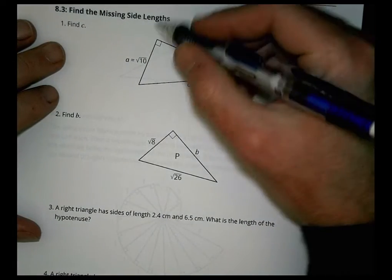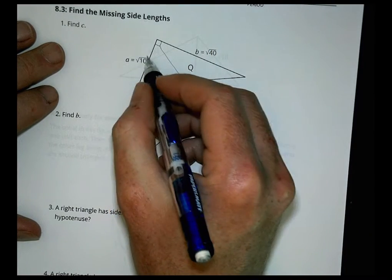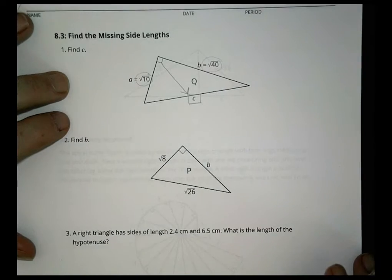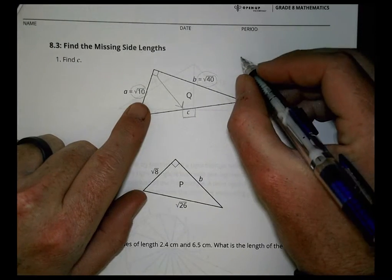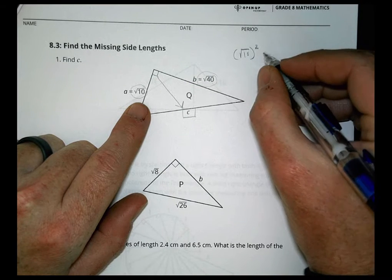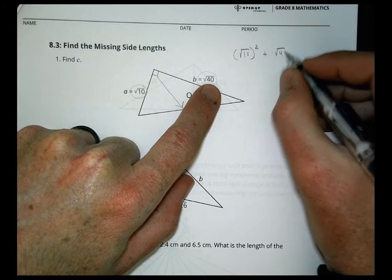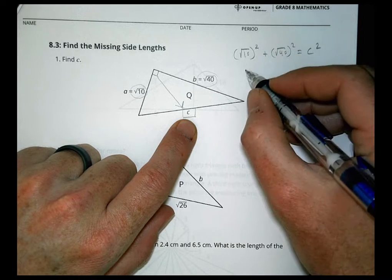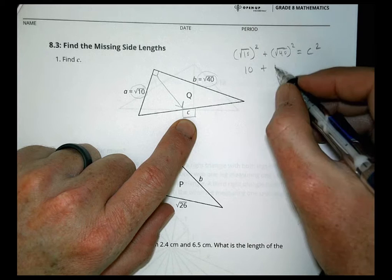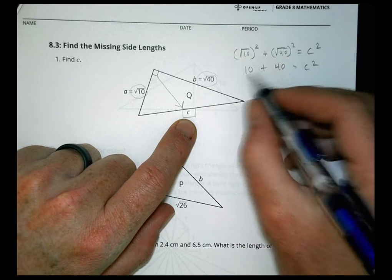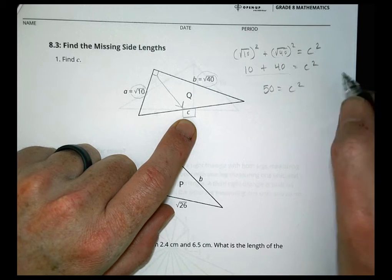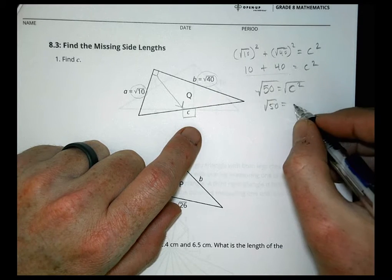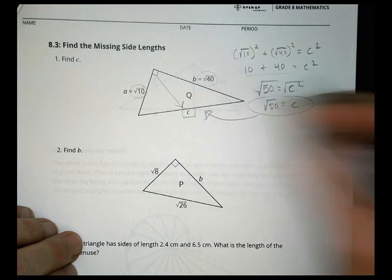Let's find the missing side lengths. The hypotenuse is across, so this value squared plus this value squared equals that value squared. We do (√10)² plus (√40)² equals c squared. The square root of 10 times the square root of 10 is simply 10; square root of 40 times square root of 40 is simply 40. That gives 10 plus 40 equals 50 equals c squared, so c equals the square root of 50.